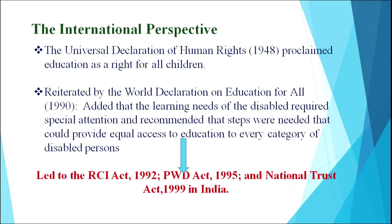We will begin with an international perspective because it is the international initiatives which have actually encouraged and made changes in the Indian scenario. In the international perspective, the first was the Universal Declaration of Human Rights 1948, which proclaimed education as a right for all children. This was reiterated by the World Declaration on Education for All 1990, which added that the learning needs of the disabled required special attention and recommended steps for equal access to education for every category of disabled persons. This international initiative led to what we call the RCI or Rehabilitation Council of India Act 1992, Persons with Disability Act 1995, and National Trust Act 1999 in India.